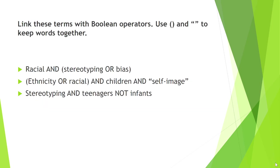The next thing we want to do is begin linking our terms together with the Boolean operators. We can use parentheses and quotation marks to keep words together. If you use quotation marks, you're going to keep your words together in precise order. So for example, the search is: racial and stereotyping or bias. We would get results that include the word racial and either the word stereotyping or the word bias.